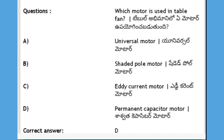Which motor is used in a table fan? Options: DC motor, induction motor, permanent capacitor motor. The answer is D, permanent capacitor motor.